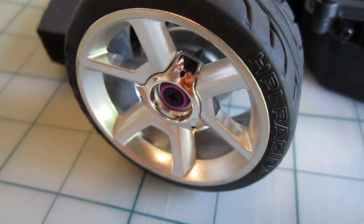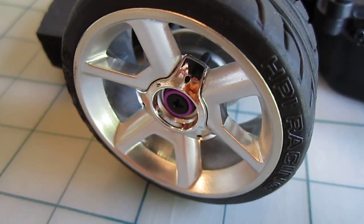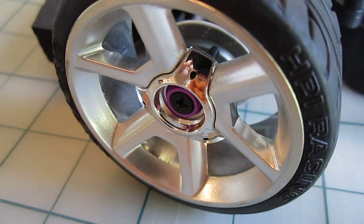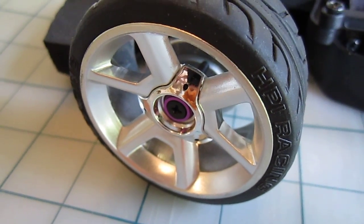What we're going to be doing today is showing you how to remove or replace the dog bone on the HPI E10 car. It's extremely simple.